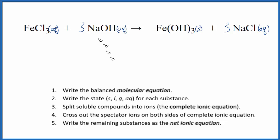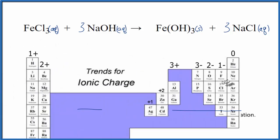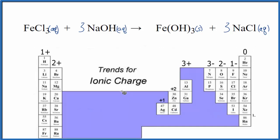Next thing that we need to do, now that we've got these states, we want to split the soluble compounds apart into their ions. That's going to be the complete ionic equation. And to do that, we need to know the charges on each of these ions. So we can use the periodic table, which can be quite helpful for determining the charge on the ions.